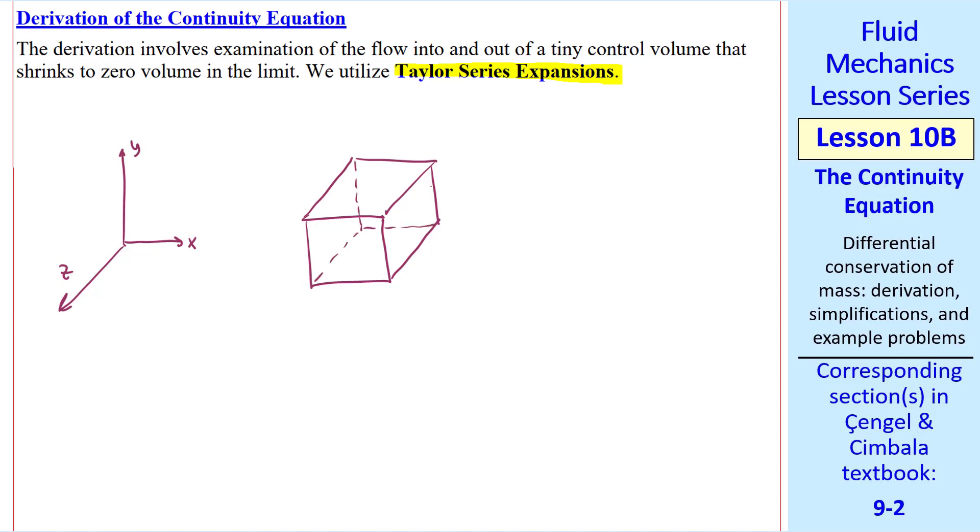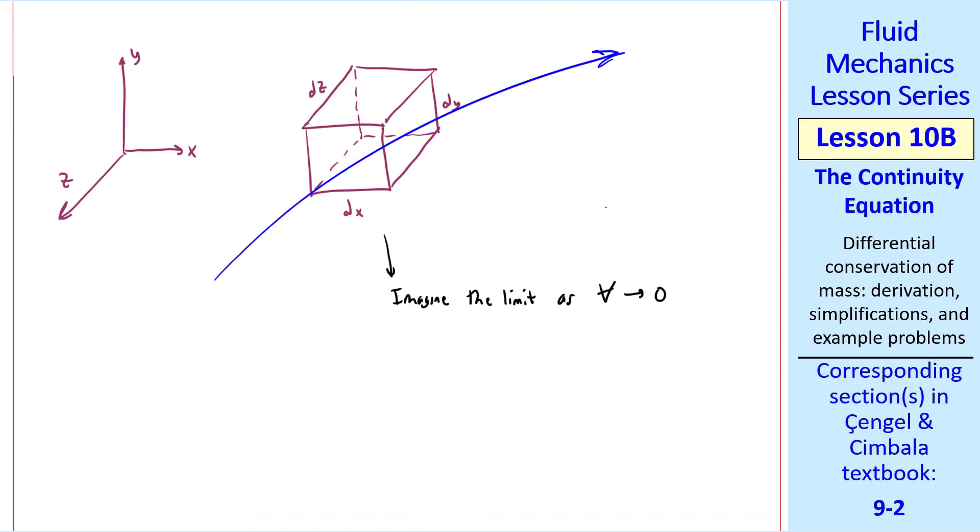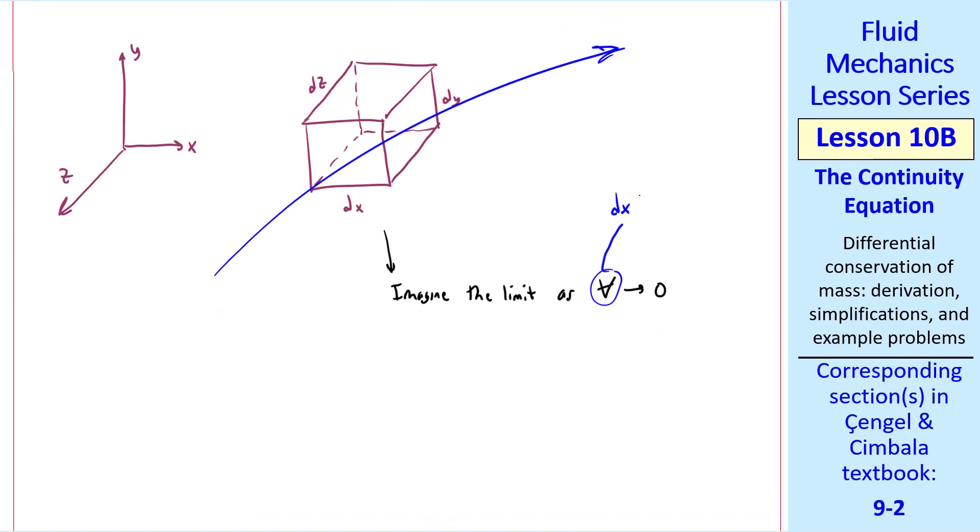This is a tiny control volume with dimensions dx, dy, and dz. It's a stationary control volume through which some flow is moving, and we'll imagine the limit as the volume goes to zero. This volume, of course, is dx, dy, dz, since it's a rectangular volume.